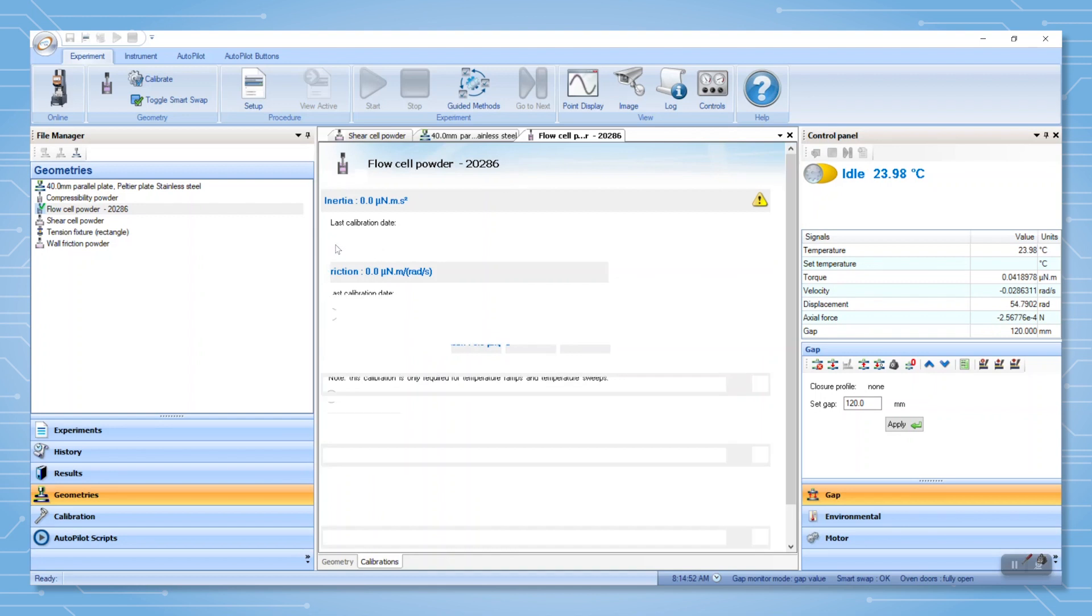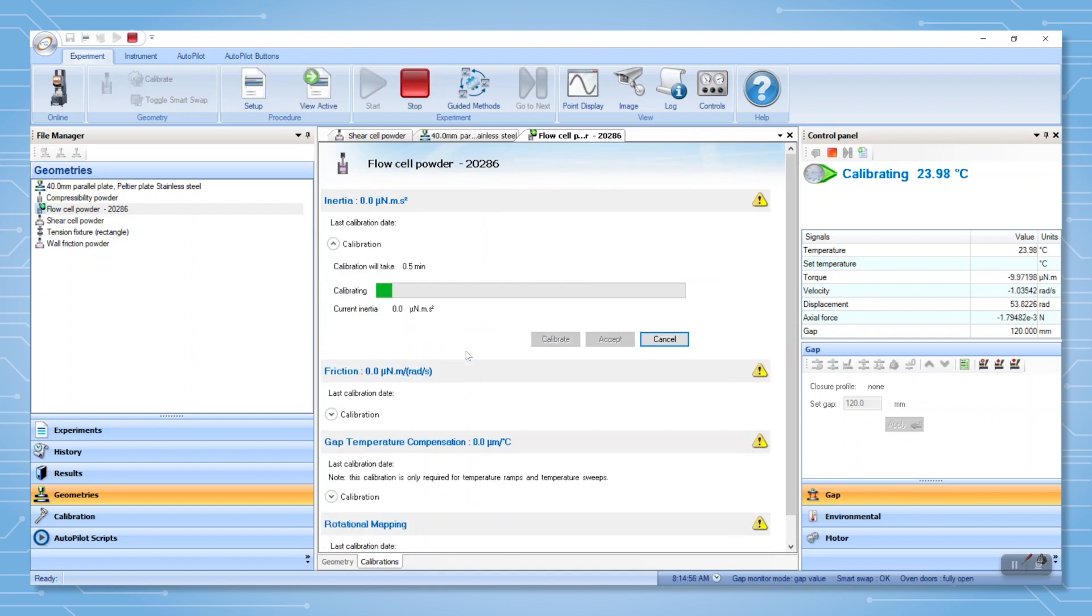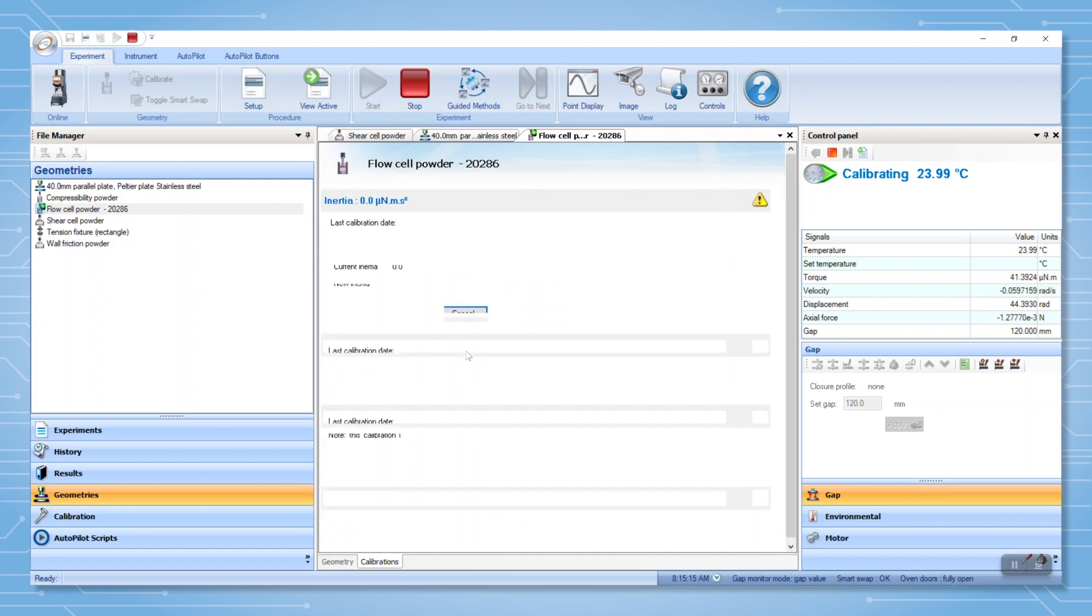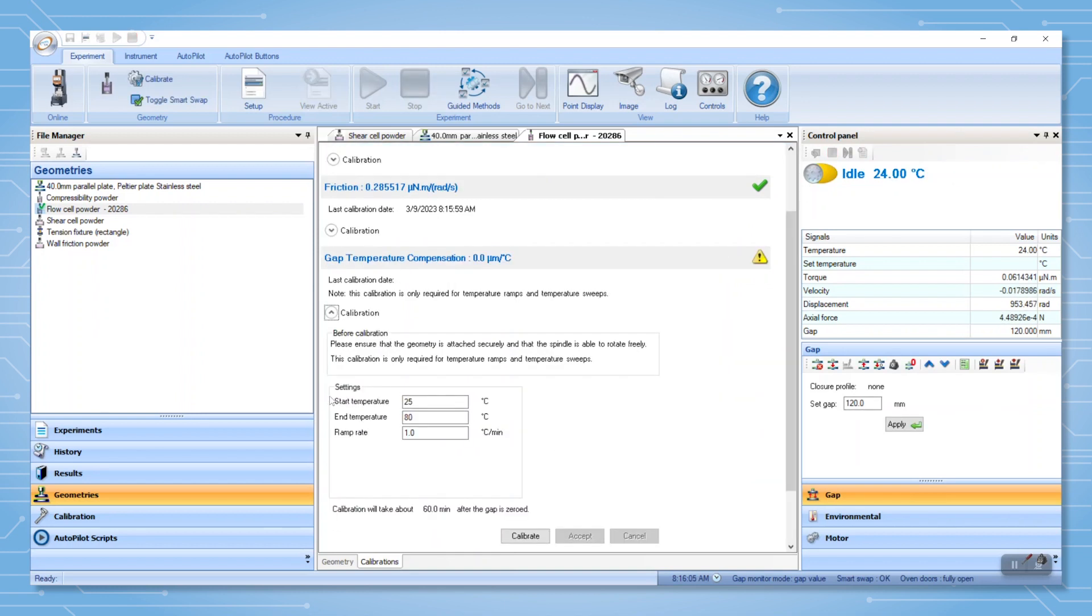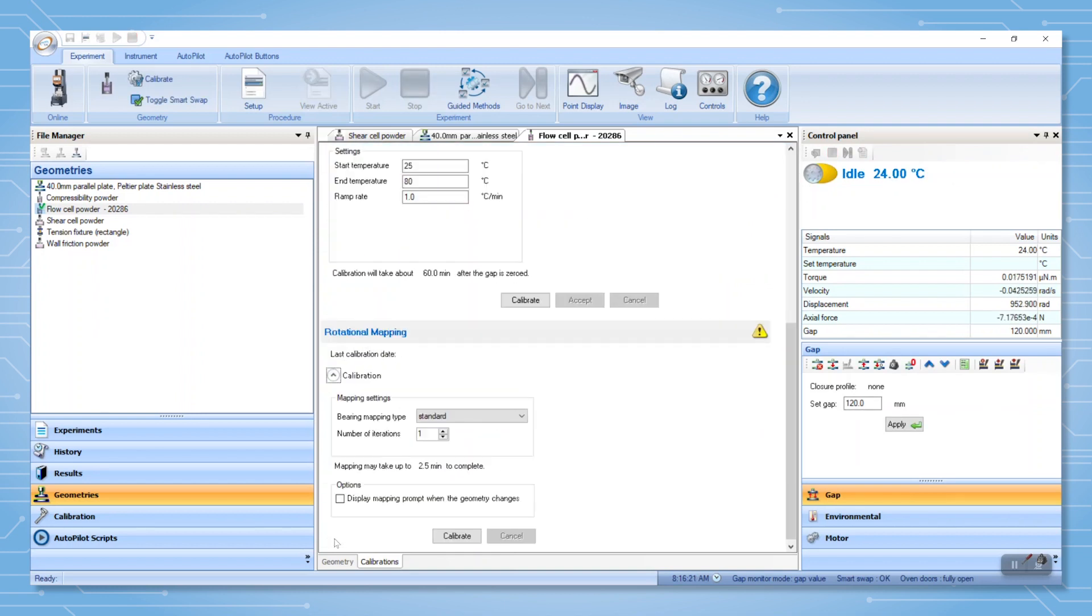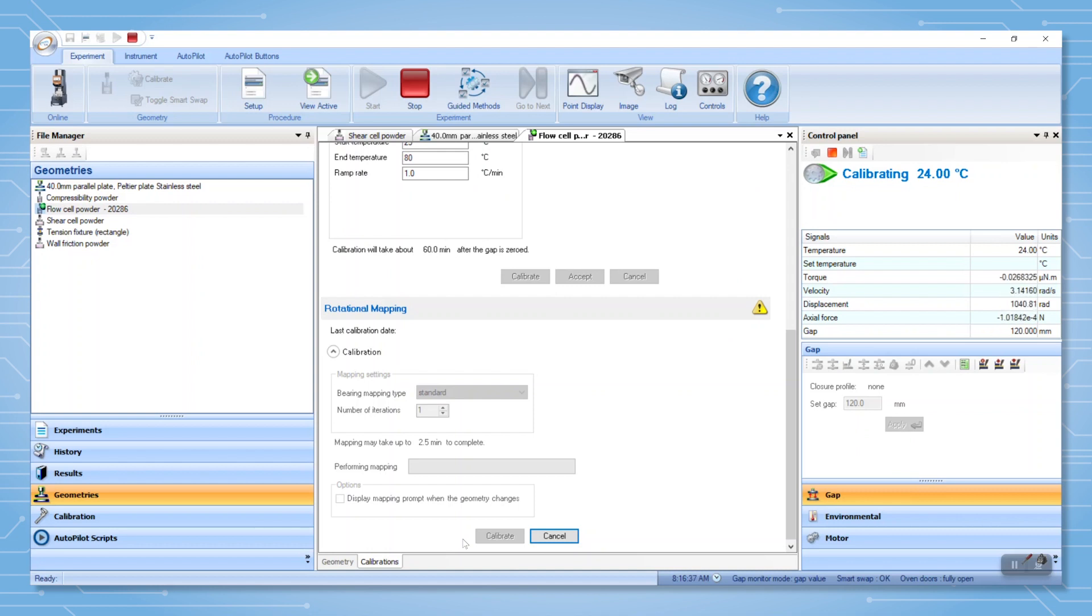Next, perform the geometry inertia, friction, and rotational mapping calibrations. The geometry inertia calibration is used to correct for the non-zero geometry moment of inertia. The friction calibration is used to correct for residual friction. Gap temperature compensation is used for temperature ramps and sweeps. Rotational mapping maps small variations in behavior around one revolution of the shaft.